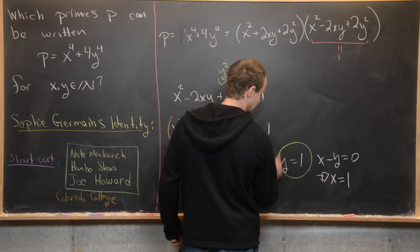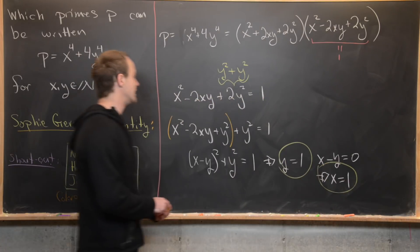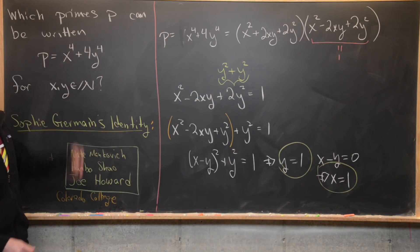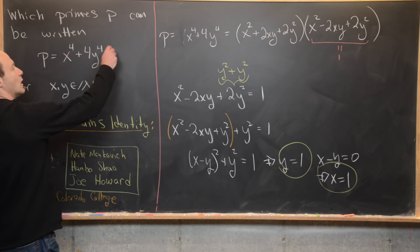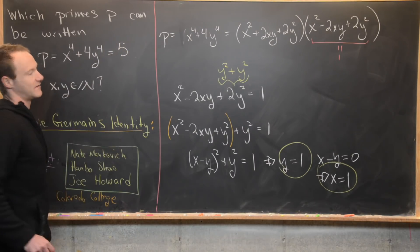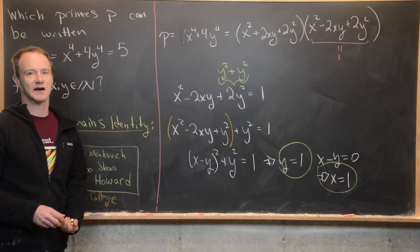And that's actually the only possibility. So this ordered pair one, one is the only possibility that turns this into a prime. And what prime is that? Well, it's the prime five. And that's a good place to stop.